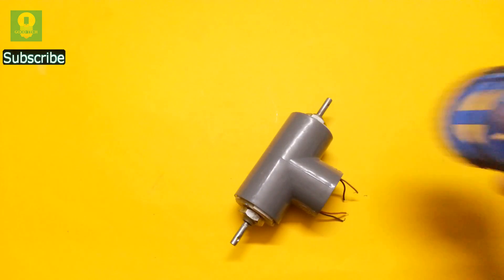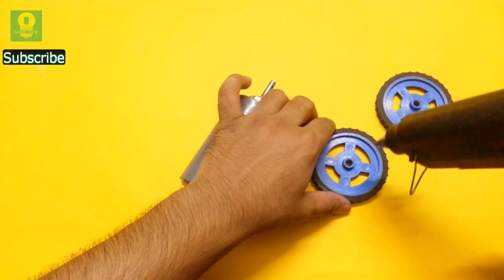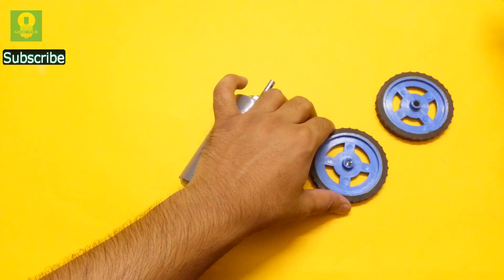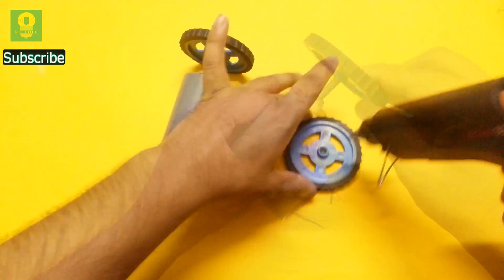Now take the motors and two wheels. Using hot glue, attach the wheels to the motor shafts.